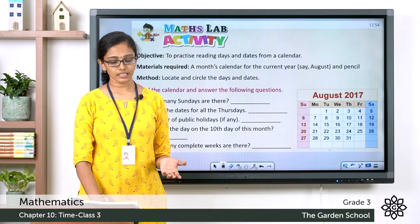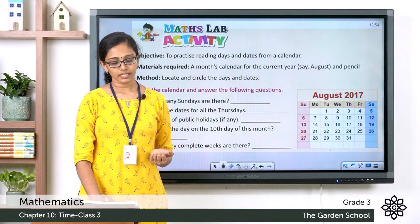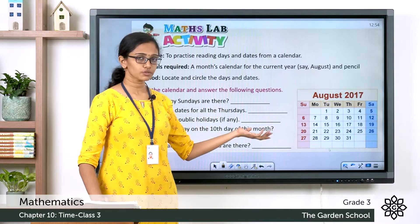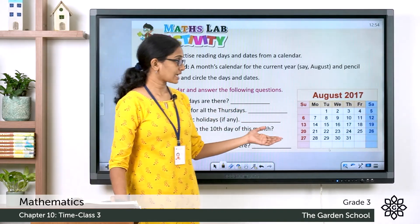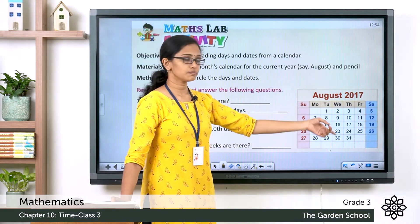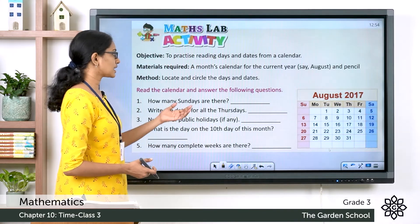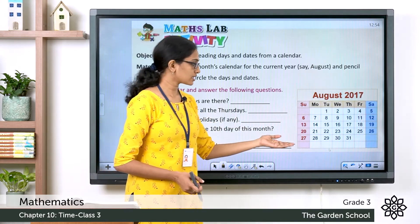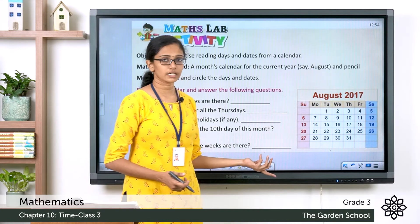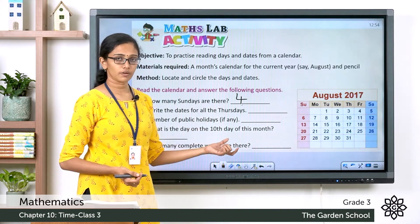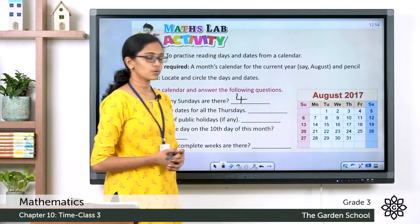The method is to locate and circle the days and dates. The first question is: how many Sundays are there? You can see the Sundays marked in red on this calendar, which is for August 2017. Counting them — there are four Sundays. Check your own calendar and write the number of Sundays.